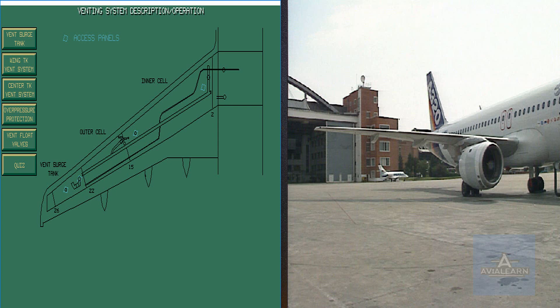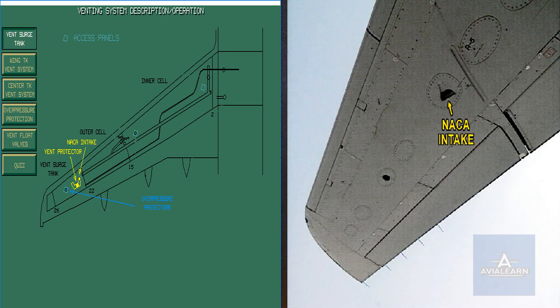Look at the venting system presentation. The fuel tank venting system prevents overstressing of tanks. Each vent surge tank vents to the atmosphere through a NACA type intake connected with a vent duct.